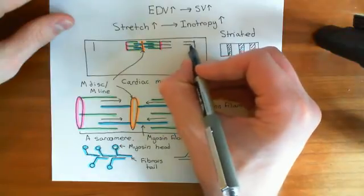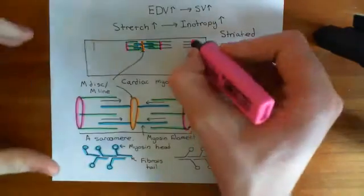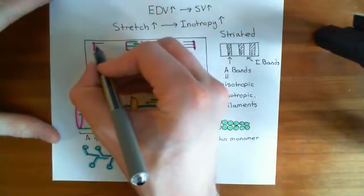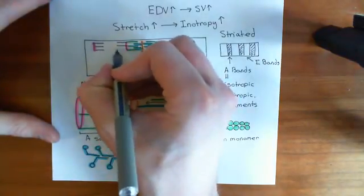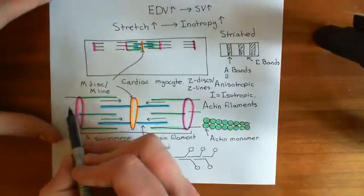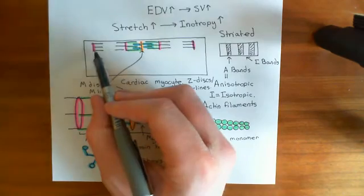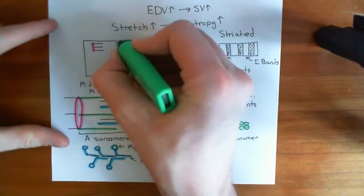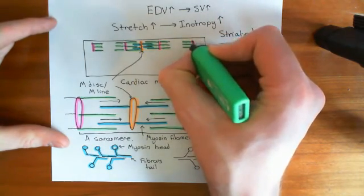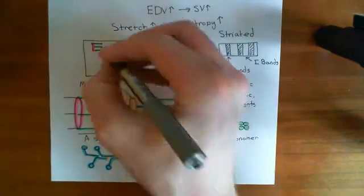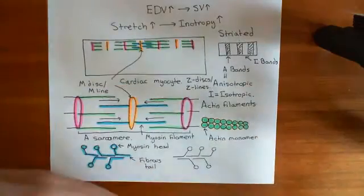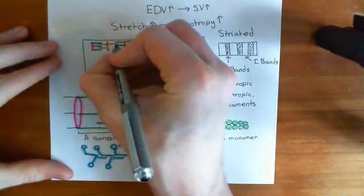This next Z-disc over here will also have actin filaments attached to it. These two things here are also Z-discs, and I might as well put some more actin filaments over here. This Z-disc on this side will also be part of the next sarcomere along, so there will be actin filaments attached to the other side of this Z-disc. Here's the next Z-disc along. Suspended between these two Z-discs with the actin filaments projecting towards one another, you'll have M-discs, and off those M-discs you will have myosin filaments — so you've got more sarcomeres.